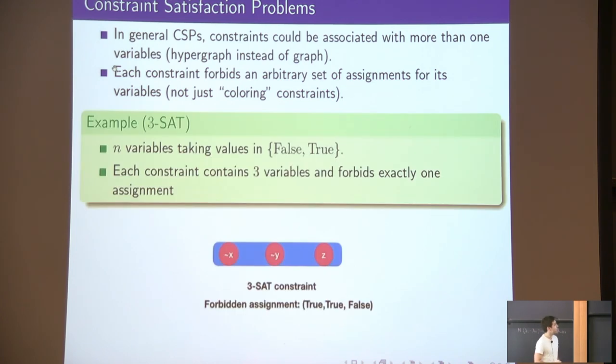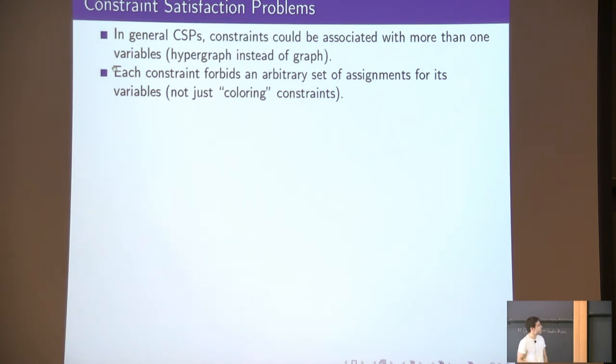In general constraint satisfaction problems, any given constraint could be associated with more than two variables, so we have a hypergraph instead of a graph in general. And we could have different constraints, so each constraint could forbid an arbitrary set of assignments for its associated variables, more than just coloring constraints.